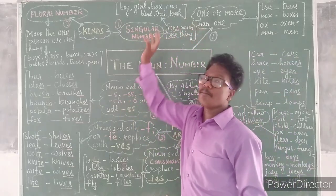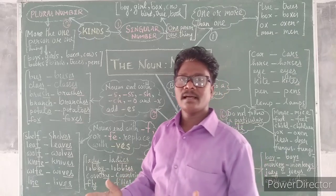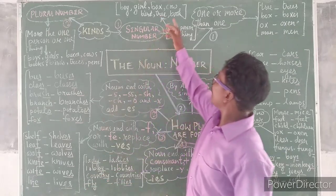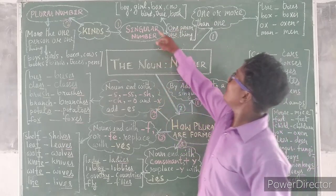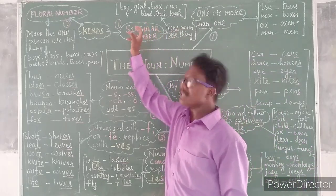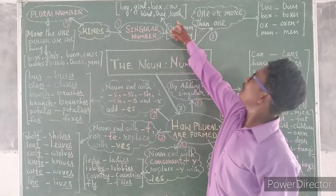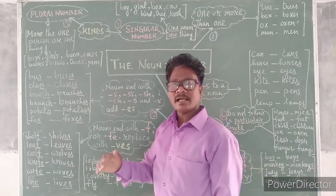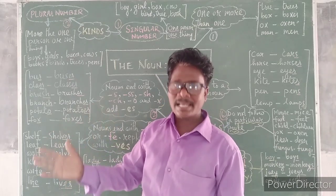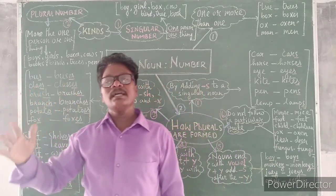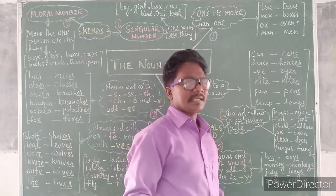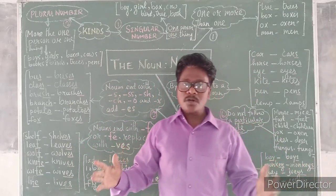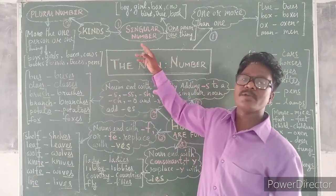Examples: boy — one boy, girl — one girl, box — one box, cow — one cow, bird — one bird, tree — one tree, book — one book. In the same way: chalk, table, fine, bench, chair, glass — we can go on. So these are singular nouns.